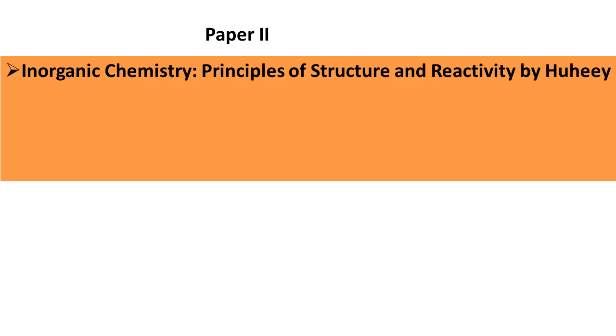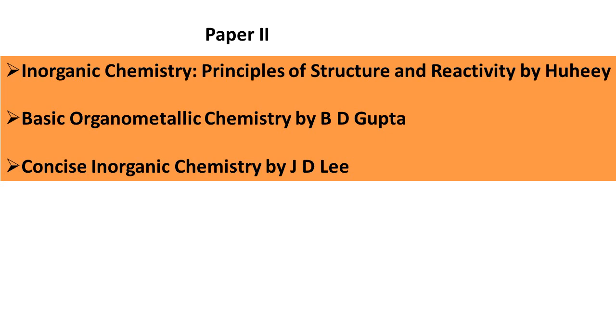Paper 2 is Inorganic Chemistry, carrying 200 marks. The important books for this are: Inorganic Chemistry Principles of Structure and Reactivity by Huheey, a very important book; Basic Organometallic Chemistry by B.D. Gupta, an Indian authored book that's easy to understand; and Concise Inorganic Chemistry by J.D. Lee.